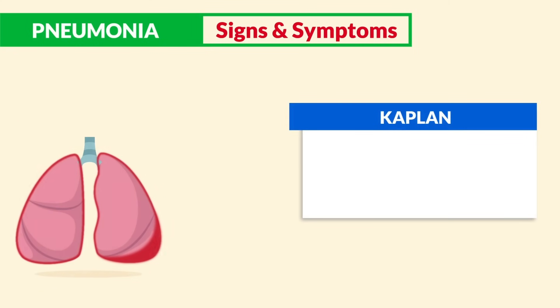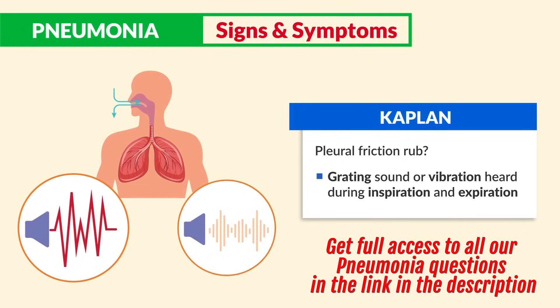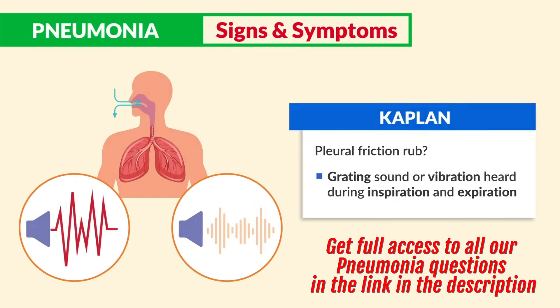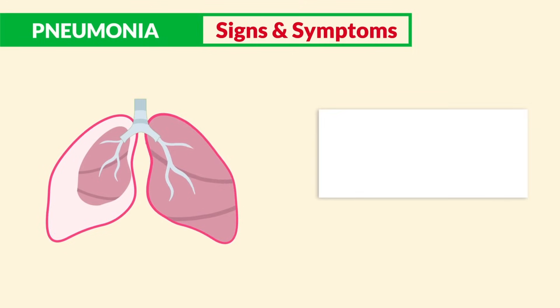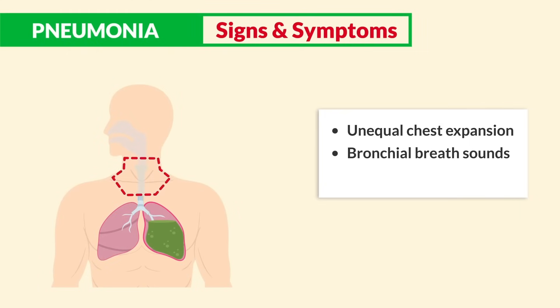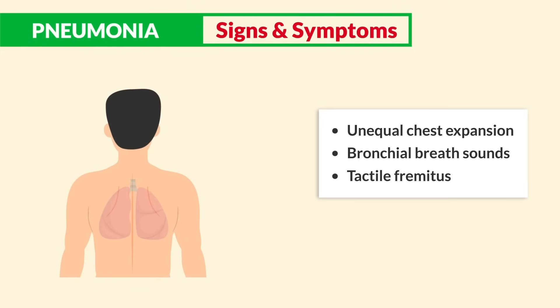Kaplan mentions a pleural friction rub is described as a grating sound or vibrations heard during inspiration and expiration. Other signs — which are not really key — include unequal chest expansion, bronchial breath sounds, which are high-pitched sounds, and tactile fremitus.